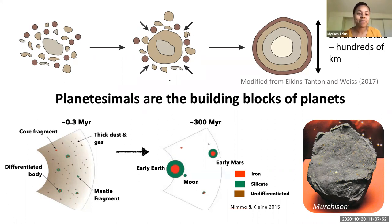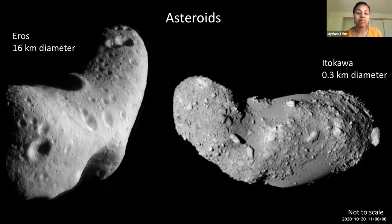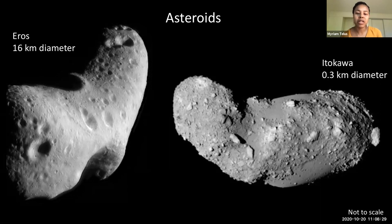Asteroids are basically remnants of rocky planetesimals that formed in the inner solar system. Most of them are found in the asteroid belt, and they occur in a wide variety. I just wanted to show you some of the ones we have close-up images of. Eros and Itokawa are ordinary type chondritic material, and we have this type of material in our meteorite collections.